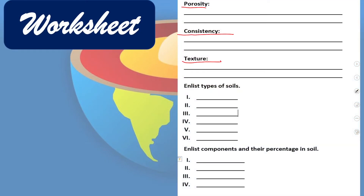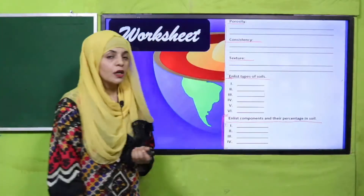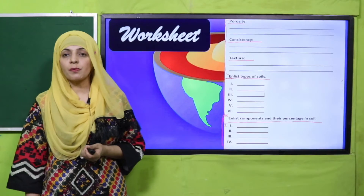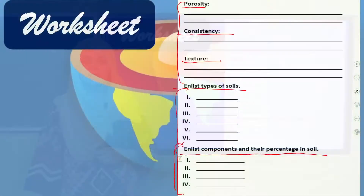What is the system of water sources in Pakistan? Write three characteristics of soil: porosity, consistency, and texture — in dino ke baare mein likhna hai. Then enlist the six types of soil. Then enlist the components and their percentages in soil — kitne components hain soil ke aur kya percentage hai unki — aapne yeh tamam yahan likhna hai.